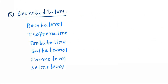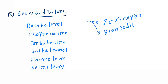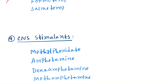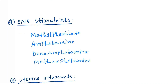Next are bronchodilators. The drugs act on the beta-2 receptor in the lungs, causing bronchodilation. Remember the mnemonic BITS — B for bambuterol, I for isoprenaline, T for terbutaline, S for salbutamol, and also formoterol and salmeterol.